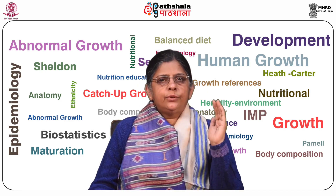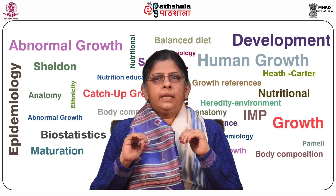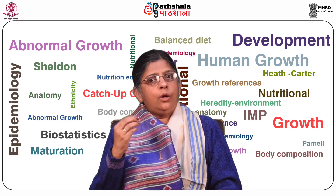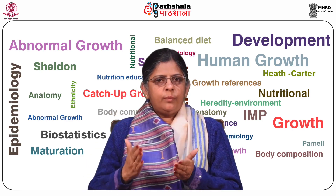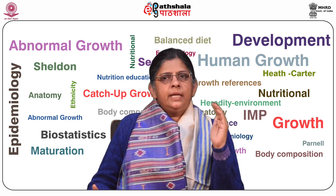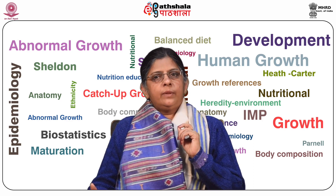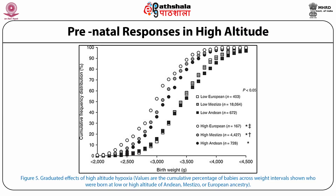The fetus at high altitude would most likely be subject to even greater stress than at sea level unless adaptive responses were made. The responses could be physiological, morphological, or a combination of both. It was demonstrated by many investigators that high altitude populations tend to have low birth weight and relatively greater placental weights than their sea level counterparts. At high altitude, there is an 18% reduction in birth weight, while the weight of the placenta relative to the weight of the neonate is about 25% greater than at sea level. A figure shows the graduated effects of high altitude hypoxia, with cumulative percentages of babies across weight intervals born at low or high altitude of Andean, Mestizo, or European ancestry.